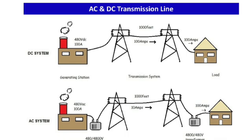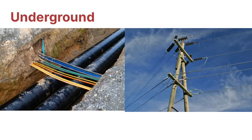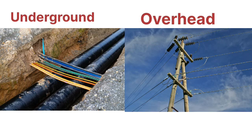Electric current can be carried by either overhead or underground cables. So in two ways the transmission line can transmit power — by overhead lines and also by underground cables — and these are the ways by which we can transmit electrical power to consumers.